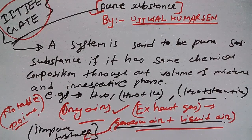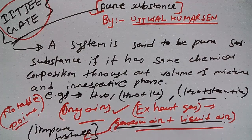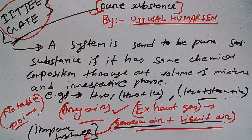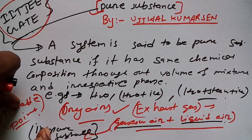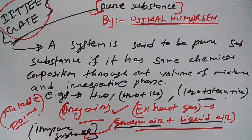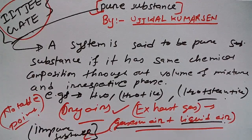To recap: pure substance means that throughout the entire volume, it has only one uniform chemical composition — there will not be varying phases. Examples include water, ice, steam, dry air, and exhaust gases. The notable exam point is that gaseous air plus liquid air is not a pure substance. I hope you got something from this video — thanks for watching, hope to see you again. Bye bye!